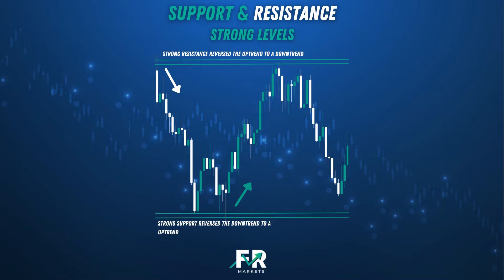The same applies when price was moving up. Price was moving up to a resistance level and it reversed the price completely. That's how we find strong resistance levels.